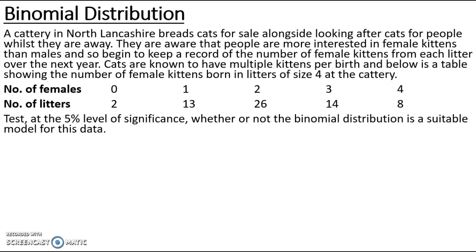Cats are known to have multiple kittens per birth, and below is a table showing the number of female kittens born in litters of size 4 at the cattery. From this table we can see that out of the 63 litters, 2 had no females so all 4 kittens were male, 13 had 1 female and 3 males, 26 had 2 females and 2 males, 14 had 3 females and 1 male, and 8 had 4 females and no males. The litters are of size 4, so there are 4 babies born.